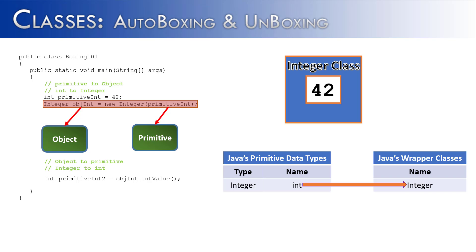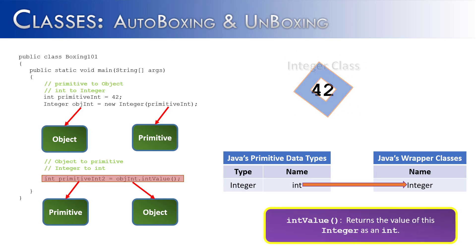Now what if I wanted to do the reverse? You can see on this line I have a primitive on the left, primitive int 2, and an object on the right, objint. And you can see I'm using the method intValue. What intValue is going to do is it's going to return the value of this integer as an int.